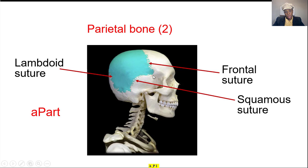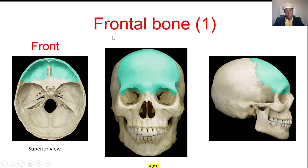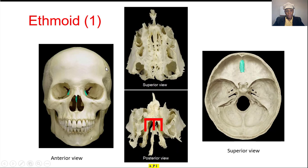The suture here is called the squamous suture. The frontal suture. And again, you see the lambdoid suture. Then the frontal bone — here you see the superior view of it from inside the skull, and here you see the anterior view and the lateral view.